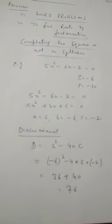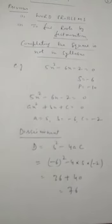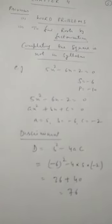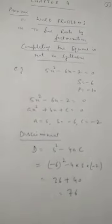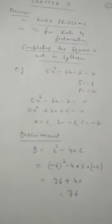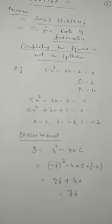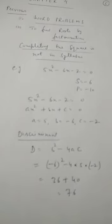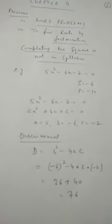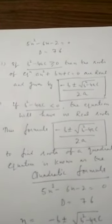We will now find the discriminant. The discriminant is denoted by D and equals b² minus 4ac. Substituting the values: b is minus 6, a is 5, and c is minus 2. We get 36 plus 40, which equals 76. So for the equation 5x² minus 6x minus 2 equals 0, the discriminant is 76. We are trying this next method using the quadratic formula.